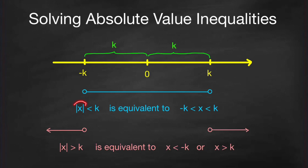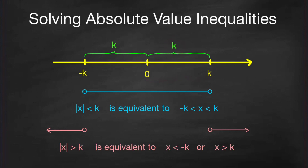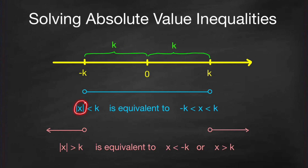The absolute value of x is the distance of the number x from the origin, or from 0, on the real line. For example, k is a positive number, so its distance from 0 is k units — that is the absolute value of k. Also, negative k is a negative number, and its distance from 0 is the absolute value of negative k, which equals k as well. So take note that absolute value of x is always greater than or equal to 0, because it represents distance from the origin.